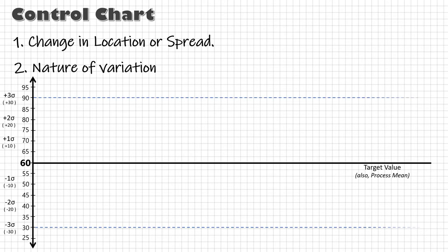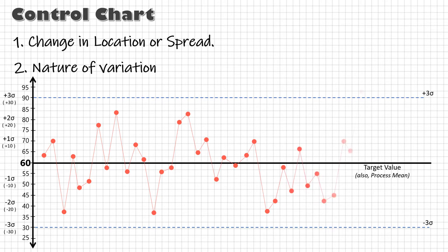Now, due to common cause variation, 99.7% of the total produced parts will lie within plus or minus 3 sigma, and there is little chance that a part produced will be outside these limits. If any part goes beyond these limits, there is a reason to believe that a special cause has occurred—a shift in location or spread.